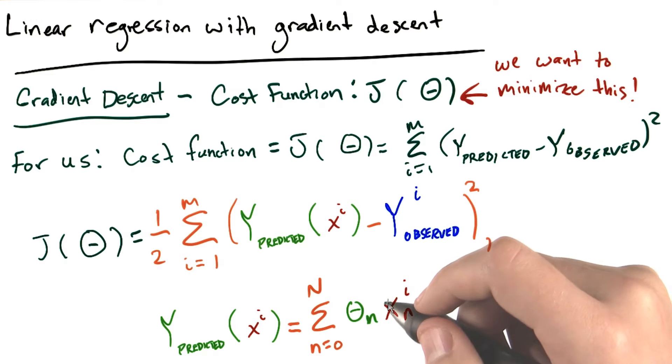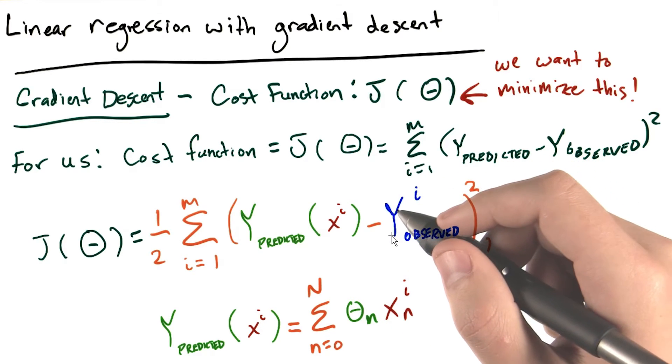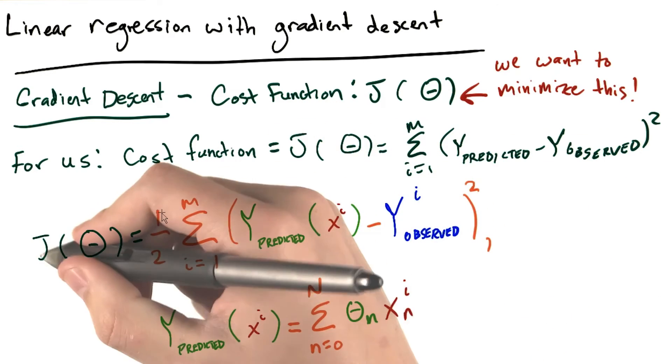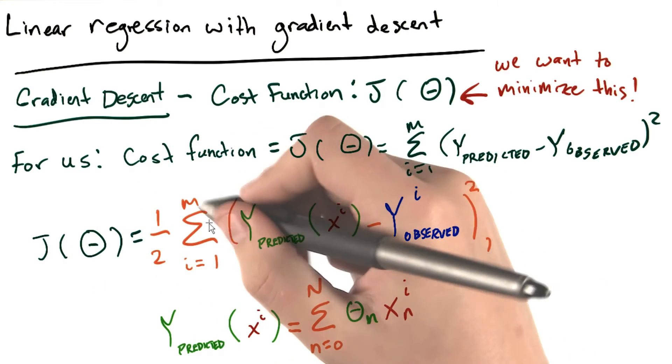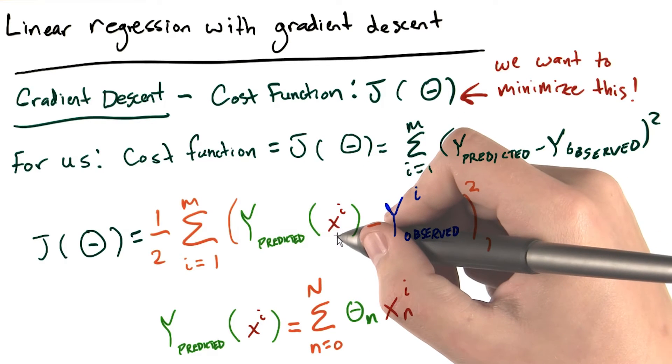So there's a lot going on here, and I've color coded this. So why don't we walk through it? First, we're just saying that J of big theta is equal to 1/2 times the sum over all of our data points of the predicted y given our x's, our input variables,